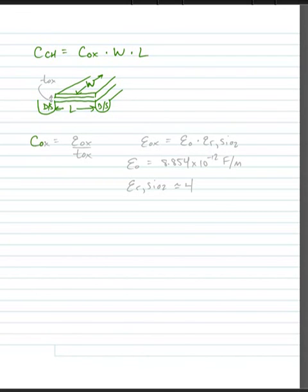Now, we also noted that Cox is equal to Eox divided by Tox. And this is the capacitance per unit area for a device. Tox is the thickness of the oxide.